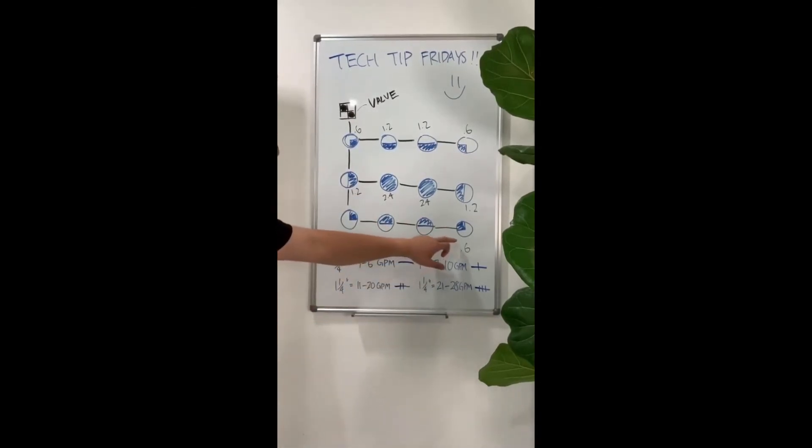So the quarter throw throws about 0.6, the half throw throws about 1.2, and the full throws about 2.4.